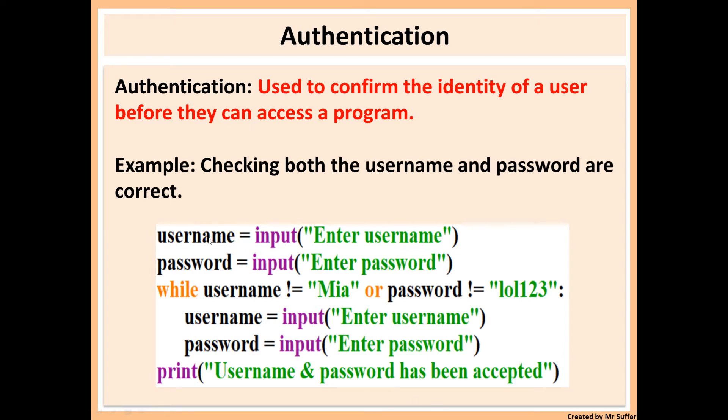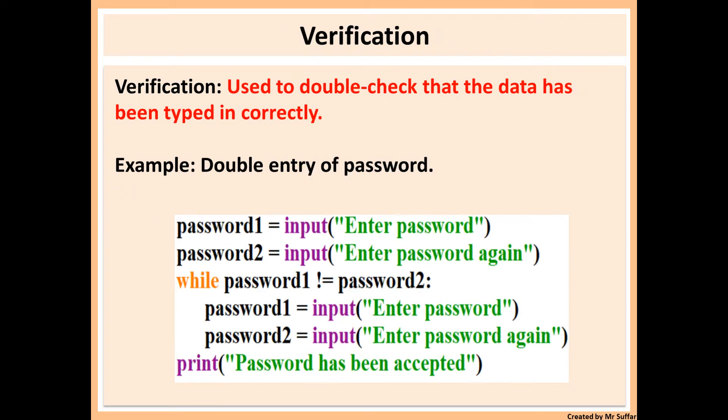Here in this example, we've got username and password examples. This code will loop as long as the user does not enter the correct username and password - MIA and LOL123. If the user does not enter both of them, or if they enter at least one incorrectly, then they would be asked to enter username and password again. This program will keep asking them until they get both of them correct. Then it will display username and password has been accepted.